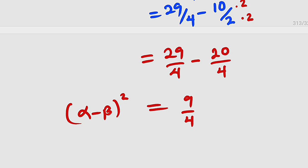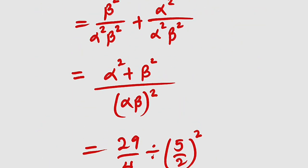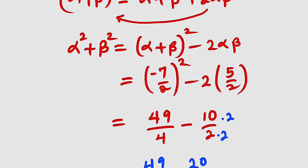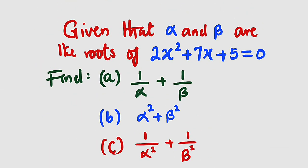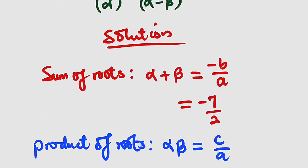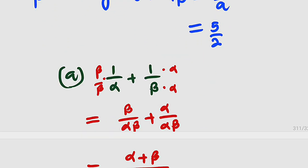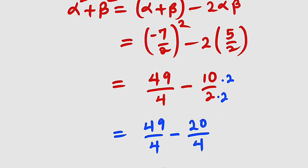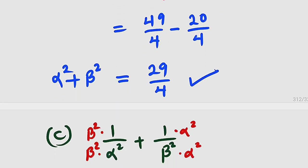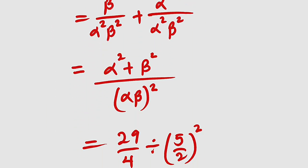If you want to confirm all these solutions, you can solve the quadratic equation given, then substitute one solution for alpha and the other for beta, and simplify all four symmetrical functions to verify. Thank you for watching. Do share with your learning colleagues, and don't forget to subscribe to my YouTube channel for more exciting videos. Bye-bye.